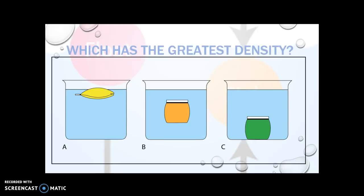Thinker question for you: which has the greatest density? How do you know? C has the most density — it is more dense than water because it is not floating; it's down at the bottom. This item here, A — the water is denser than whatever object A is, since A is floating.